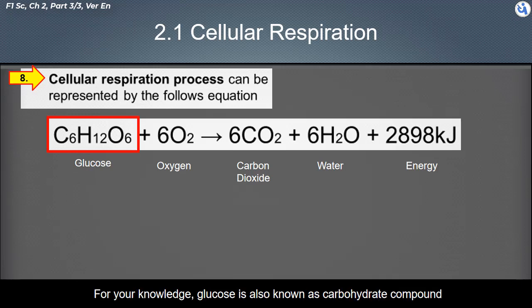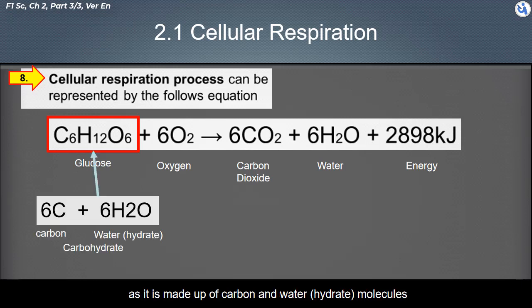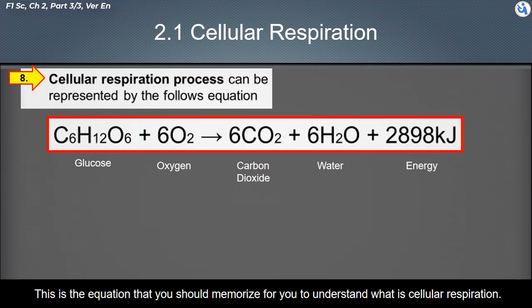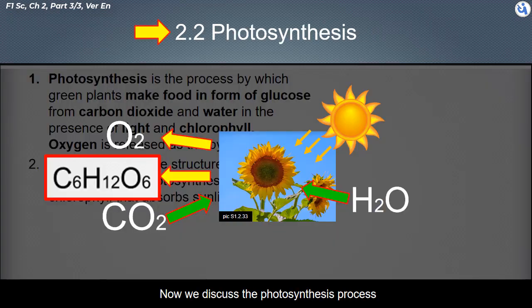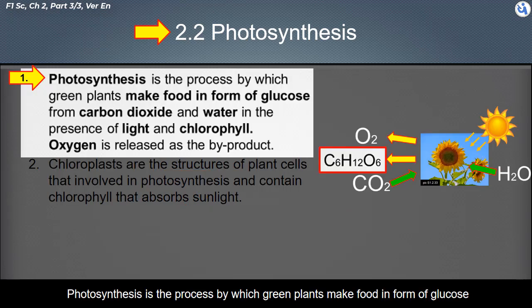For your knowledge, glucose is also known as a carbohydrate compound, as it is made up of carbon and water, or hydrate molecules. This equation is one you should memorize to understand cellular respiration. That concludes the content on cellular respiration. Now we will discuss the photosynthesis process.